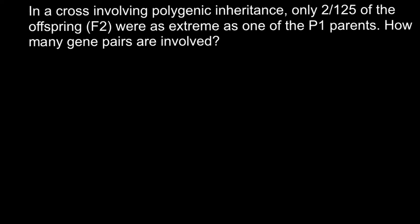Hi! This video is going to be about polygenic inheritance, about breeding and selection, and about additive traits. Here is a problem: in a cross involving polygenic inheritance, only 2 out of 125 of the offspring F2 were as extreme as one of the parents. How many gene pairs are involved?